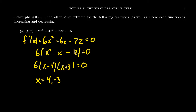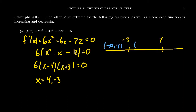We now have to test whether these critical numbers are local extrema or not. Just because you have a critical number doesn't mean it's necessarily a maximum or a minimum — we need to test it using the first derivative test. We're going to build a sign chart. Think of this line as the x-axis, and we'll mark it based upon our critical numbers, negative 3 and 4, breaking the x-axis into three pieces: negative infinity to negative 3, negative 3 to 4, and 4 to infinity.